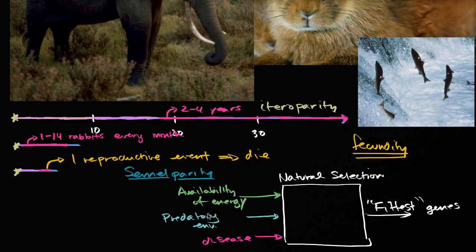Every moment that an organism is alive, it has to worry about these things. It has to worry about finding food or competing for food. It has to worry about predators. It has to worry about disease. These are the factors that play into what gets selected for.